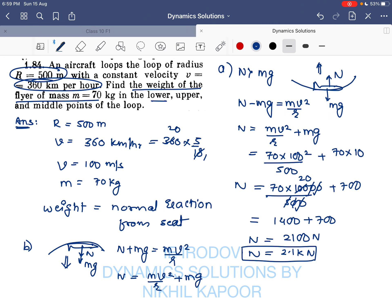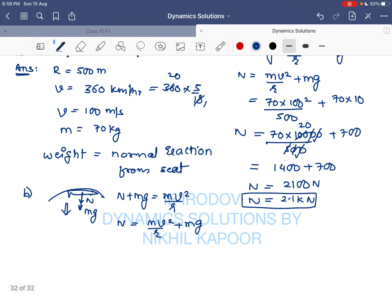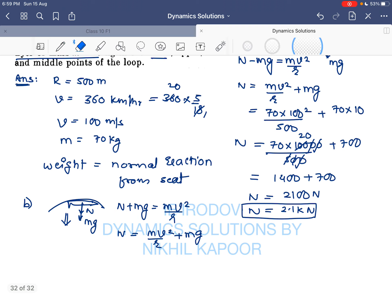So N will be equal to mv² / r minus mg. We have already calculated mv² / r, which is 1400, so we don't have to solve again and again. So it will be 1400 minus 700, which comes out to be 700 newton. So the weight felt will be 700 newton or 0.7 kilonewton.